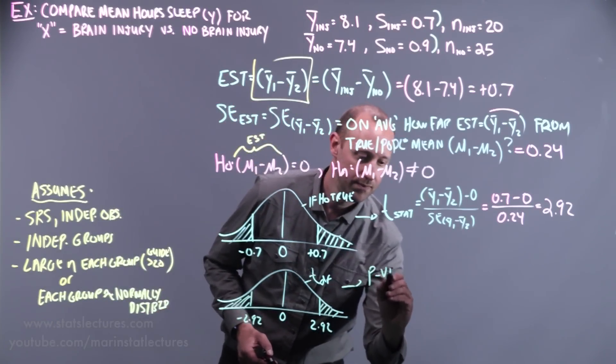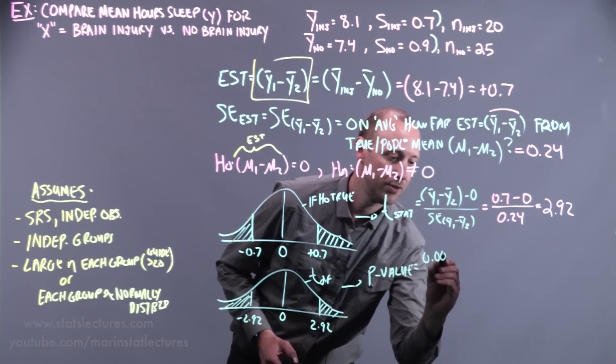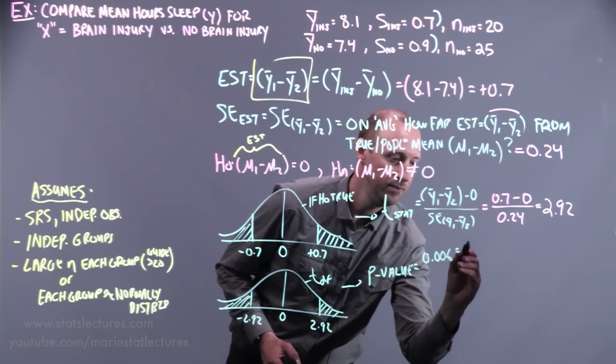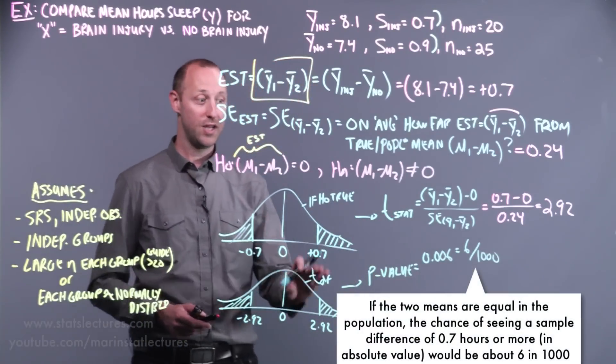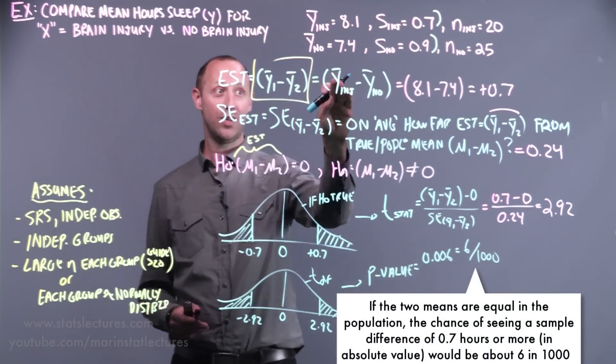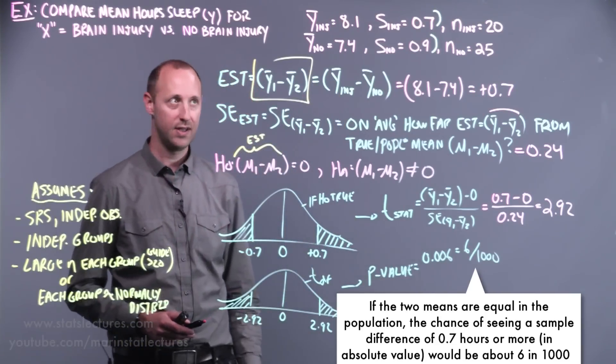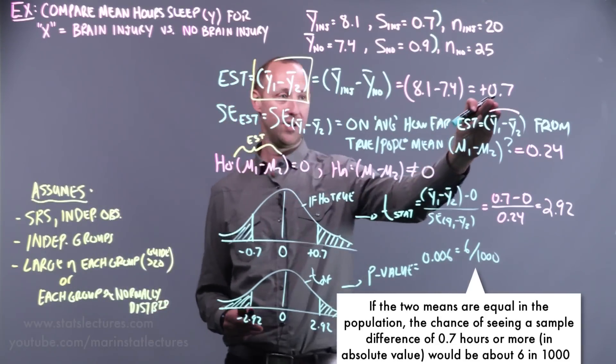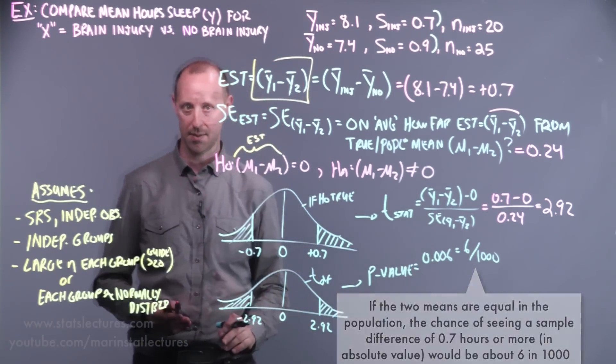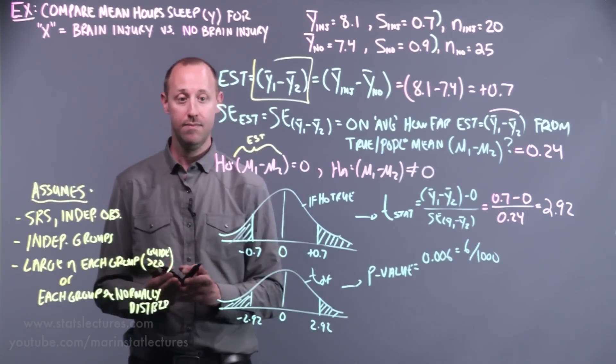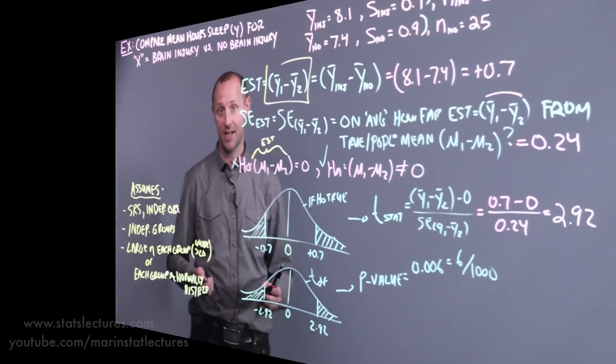If you work this out, you're going to find the p-value comes out to be 0.006 or 6 in 1,000. If our null hypothesis is true, if there's no difference in the means of these two groups at the population level, the chance of seeing a sample difference of 0.7 hours or more is going to happen about 6 in 1,000 times. With this, we can reject our null hypothesis, say I have evidence to believe the alternative hypothesis is likely true.